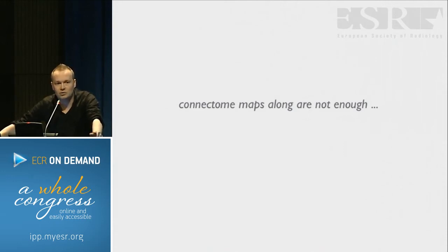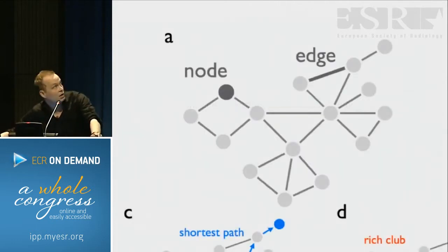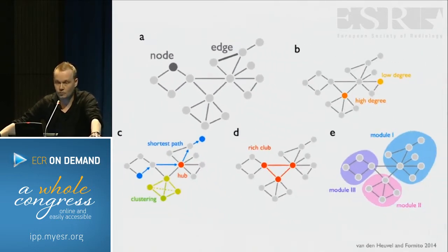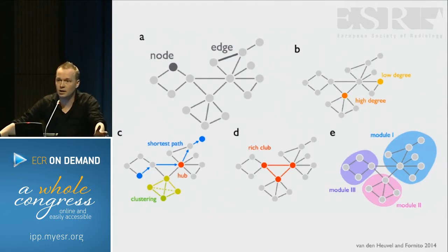Connectome maps are just a tool to map the connections of the brain. But if we want to understand something of those maps, we need an additional layer. One of those layers is graph theory — a mathematical tool to understand the topology of a system. As Ed already showed, we can divide a network into nodes and define the edges as the connections between those nodes. Using graph theory, we can reconstruct different metrics from these graphs, like communication distance — which we call path length — communication efficiency, the formation of modules, or the level of local clustering.